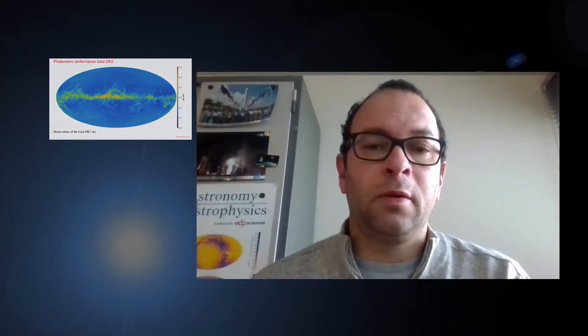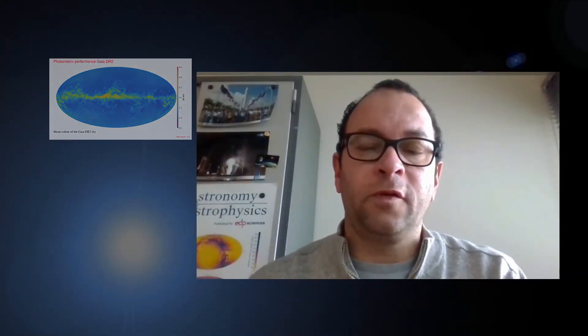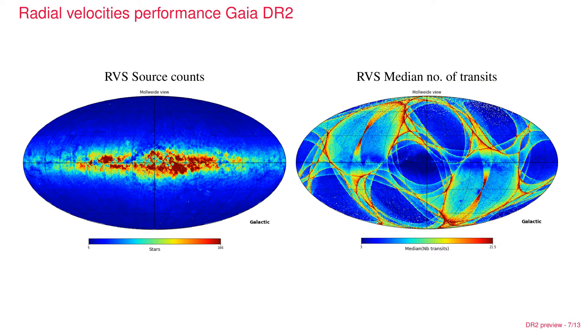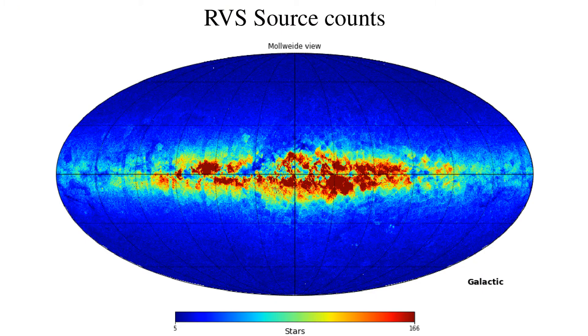We switch to the radial velocities determined with the onboard spectrograph. You see here two images on the left, this is on slide seven. You see an image of the radial velocity source count, the number of stars per square degree for which we have a radial velocity with an obvious concentration towards the Milky Way plane. You also see some small artifacts near the Milky Way plane which look like the edges of photographic plates.